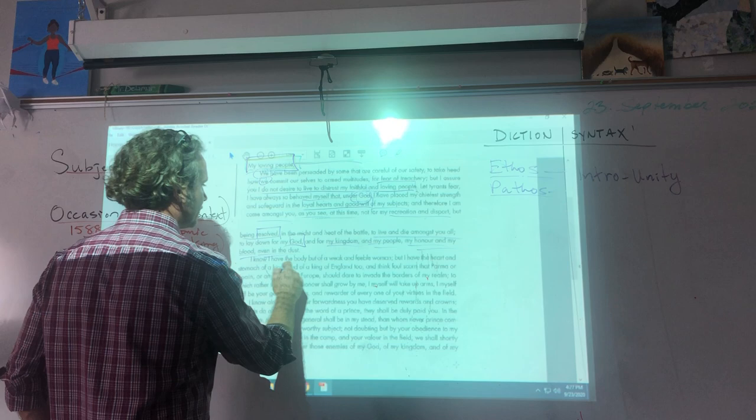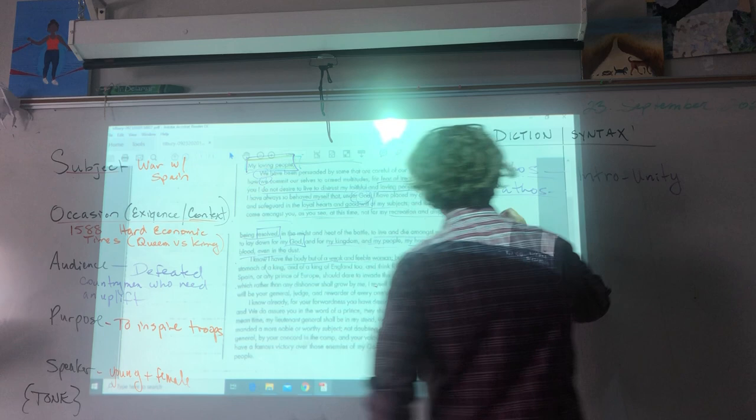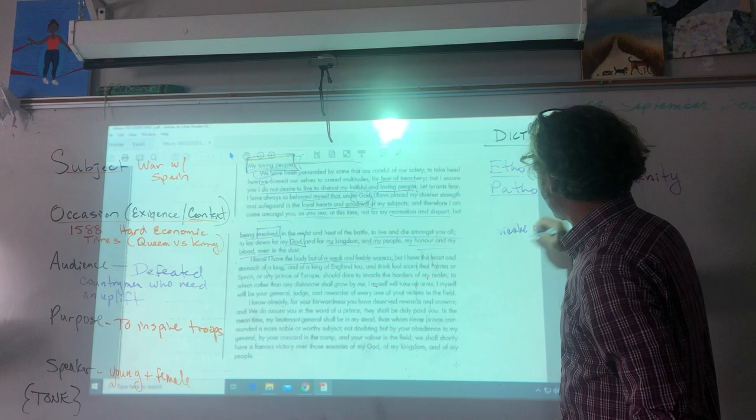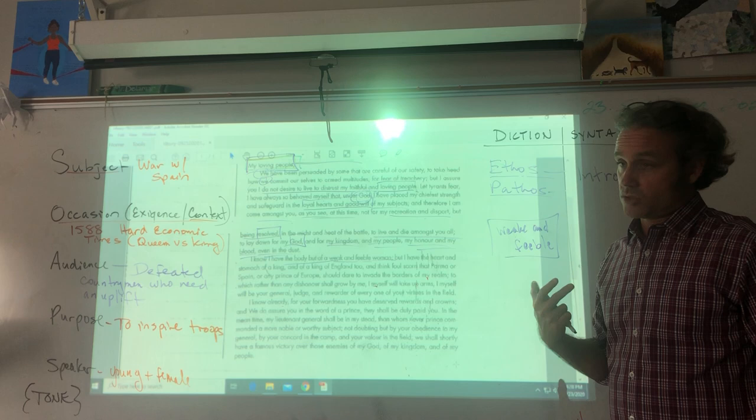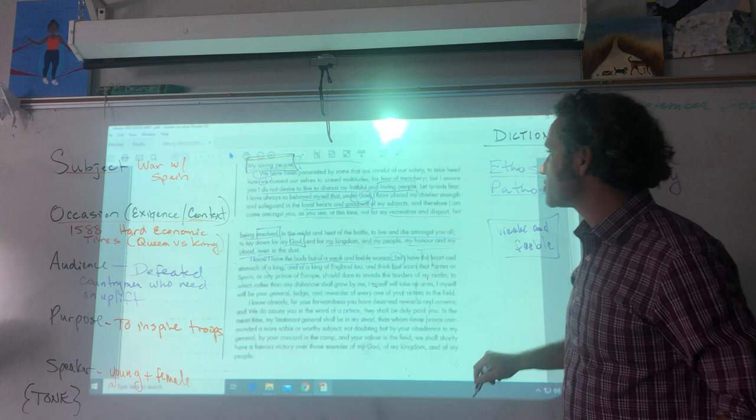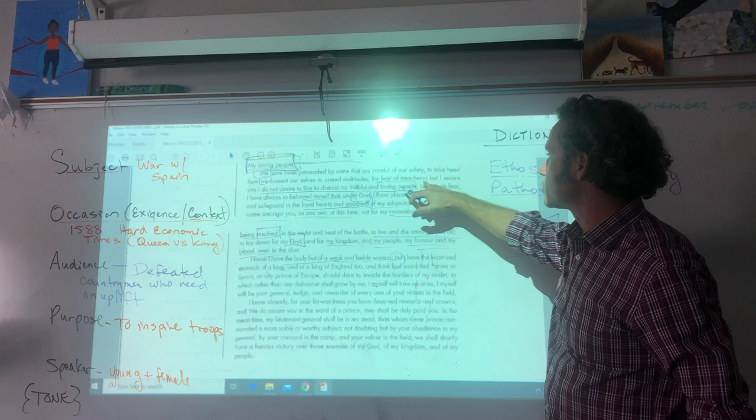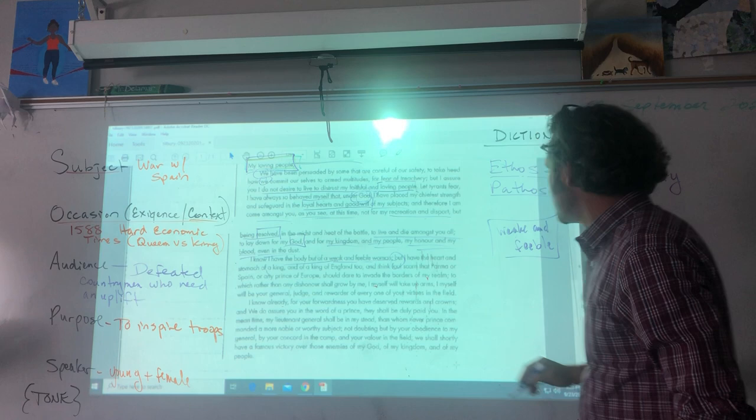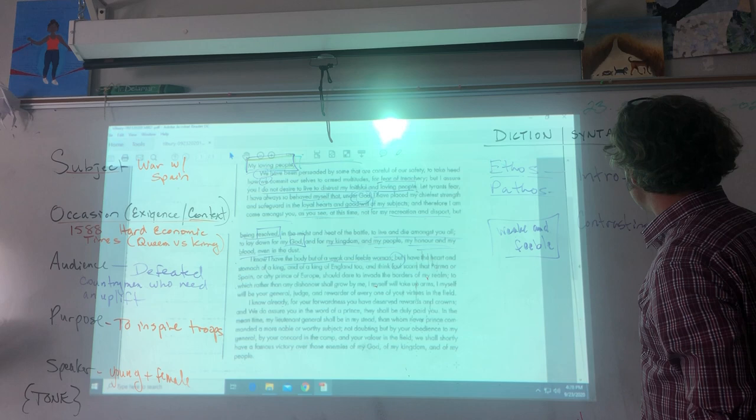'I know I have the body of but a weak and feeble woman.' Why does she bring these words—weak and feeble? She's not weak and feeble, she's standing out there amongst them. She's owning the fact that she's a woman, she's not a king. But—here's that contradiction again—she uses these contrasting ideas. 'I don't want to stand out here, I'm not gonna stand in front of armed multitudes for fear of treachery, but I assure you I do not desire to live.' She uses that same construct.